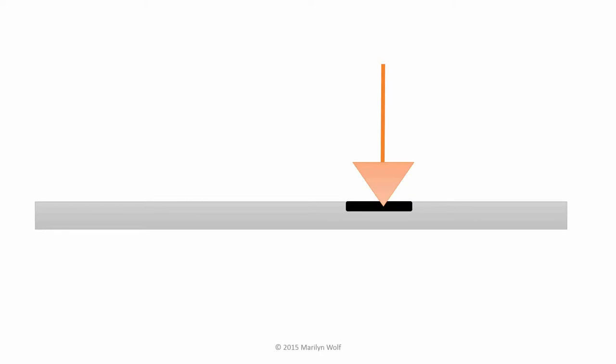Here's an optical disc. The data is actually stored on the back in a spiral using little tiny pits. This is the cross-section of an optical disc, and here's a pit. The pit changes the way that a laser is reflected off of the disc. When a laser beam hits the disc, it's scattered. On a different part of the disc that doesn't have a pit, the laser beam is reflected. So we can use the pits to record 0s and 1s for data on the disc.